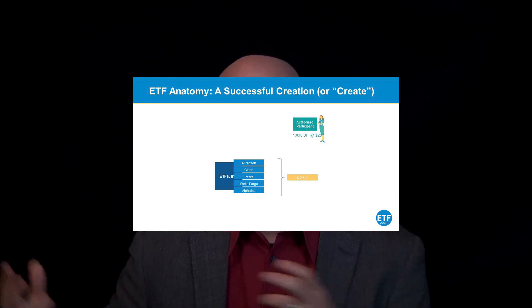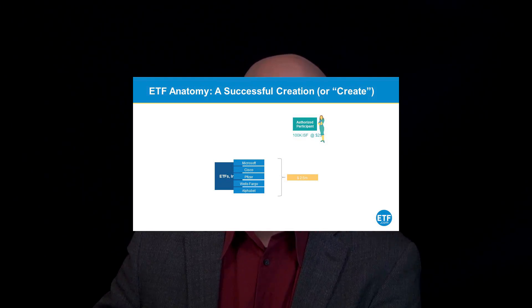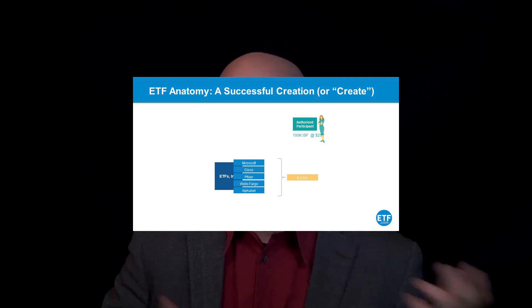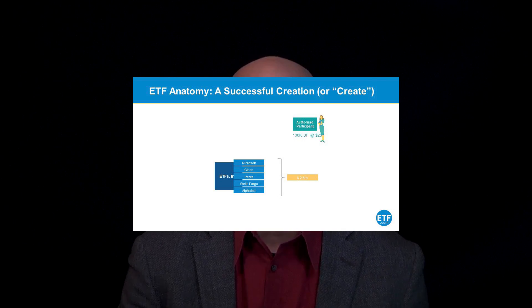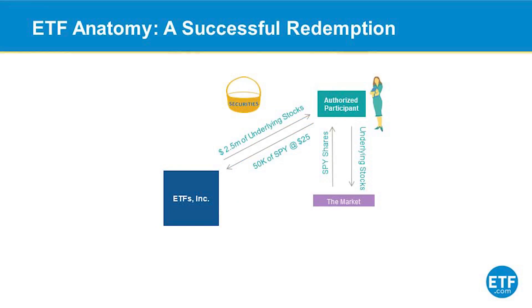It's really that simple. The authorized participant goes out with a shopping list, buys everything they need in the basket, hands the basket to the ETF, and gets ETF shares in return. That's called a create. Redemption works in the opposite direction. If the authorized participant has a whole bunch of shares of the ETF they don't want anymore, they just hand those shares over to the ETF company, and in return they get back that same shopping list — that basket of stocks like Cisco, Microsoft, whatever it was — which they can then go sell in the open market.